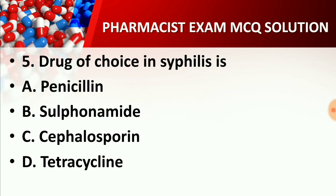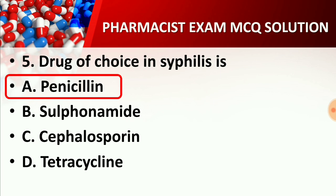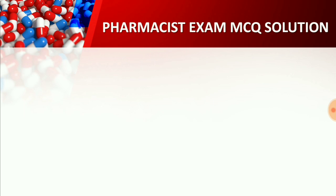Question number five: Drug of choice in syphilis. Options: Option A: Penicillin, Option B: Sulphonamide, Option C: Cephalosporin, Option D: Tetracycline. The right answer is Option A: Penicillin. Drug of choice in syphilis is penicillin. We have already made a video on drug of choice, Part 1 and Part 2 — you can check that out.